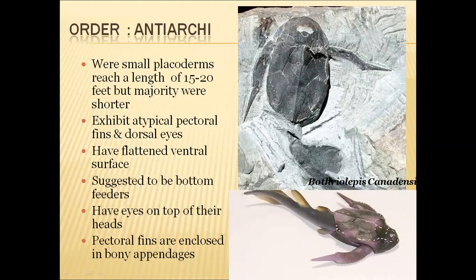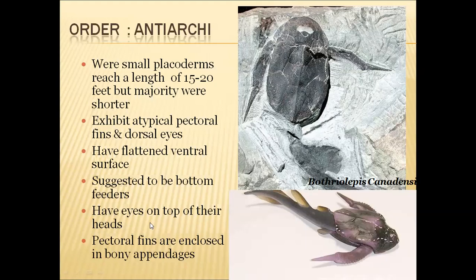Antiarchi — example Bothriolepis — are small placoderms that may reach 15 to 20 centimetres, but the majority were very small organisms. They exhibited atypical pectoral fins and had dorsally placed eyes. They had a flattened ventral surface, suggesting a bottom-dwelling lifestyle. Pectoral fins were enclosed in bony appendages.